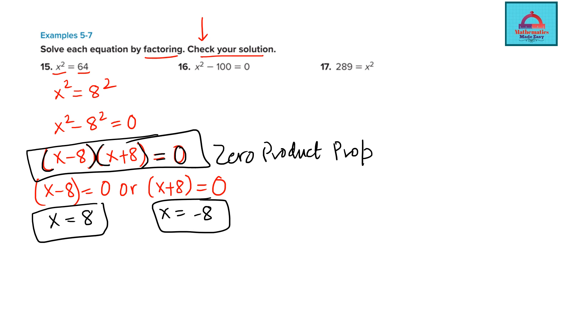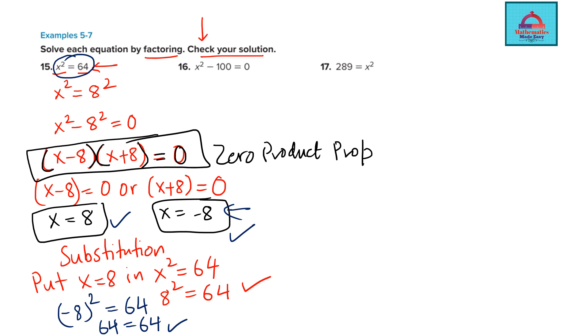Now to check your solution, use the method of substitution. Put x = 8 in the original equation x² = 64: (8)² = 64, both sides are equal. For x = -8: (-8)² = 64, also equal. Both are correct solutions. So the solution for question 15 is x = ±8.